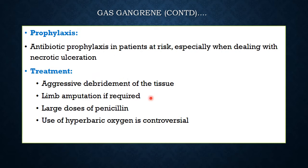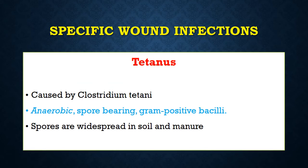Treatment includes aggressive debridement of tissue and limb amputation if required. Large doses of benzyl penicillin — 10 to 20 lakh units every six hours — are given in addition to broad spectrum antibiotics to counter the infection. Use of hyperbaric oxygen has been shown to be beneficial in some research but remains controversial and is generally not readily available.